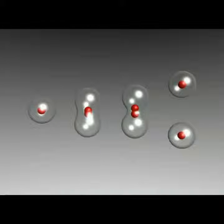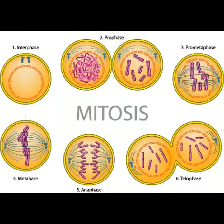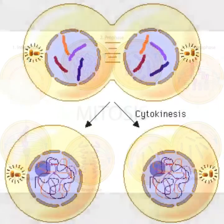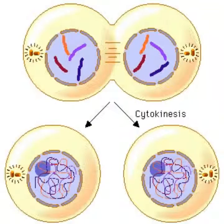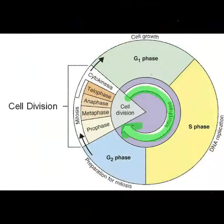In eukaryotes, cell division occurs in two major stages: mitosis and cytokinesis. To sum it up, these two stages allow the cell to divide and successfully replicate itself.